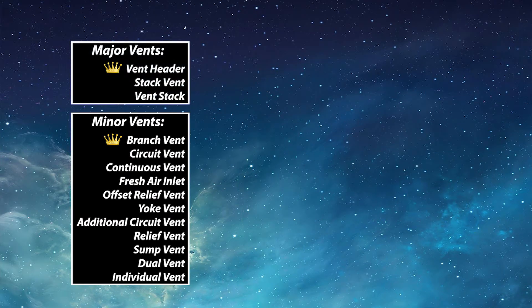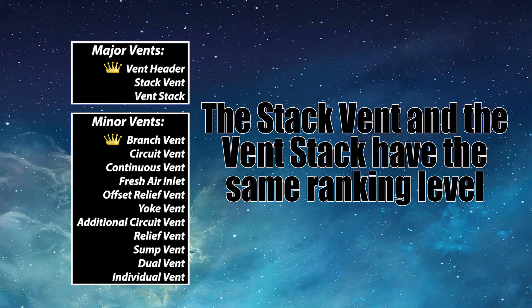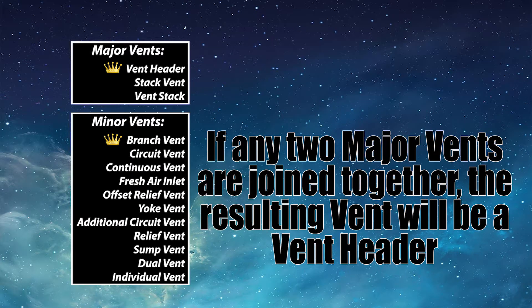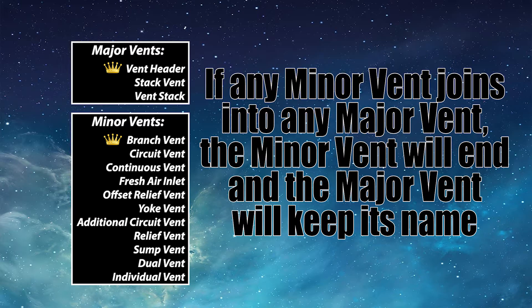Moving on to the major vents — all three major vents require a developed length to size them. The stack vent and the vent stack are of equal ranking even though they look totally different. There's only one vent that has a greater rank than them, and that's the vent header. If any two major vents join together, the resulting vent will always be a vent header, which is the highest ranking vent in a plumbing system. It's also important to note that if any minor vent joins into a major vent, the minor vent will end and the major vent will keep its name.